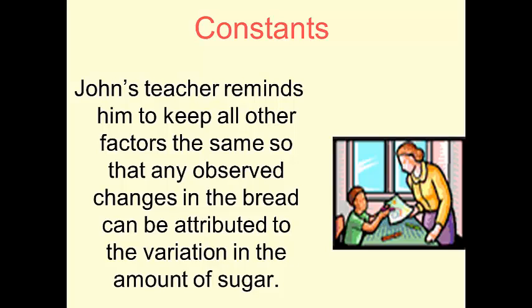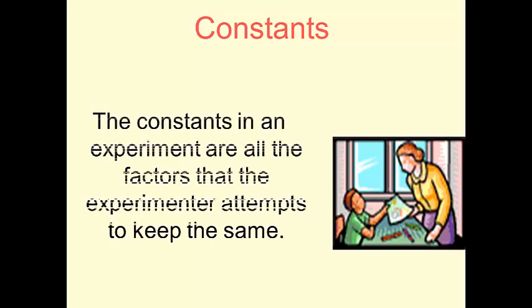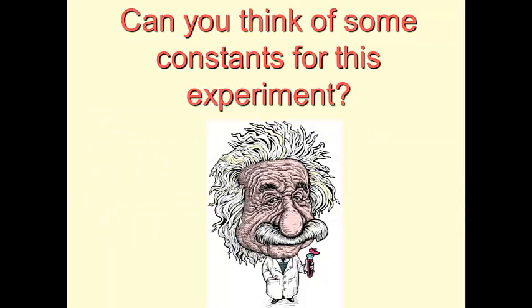John's teacher reminds him to keep all other factors constant. So, the temperature of the oven should be constant. The type of pan that he used should be constant. The amount of all of the other ingredients should be exactly the same. The constants in an experiment are all the factors that the experiment attempts to keep the same. Can you think of some constants in this experiment? I just gave you some examples.